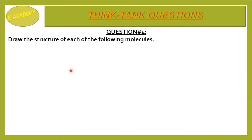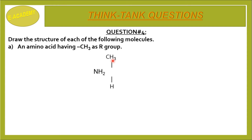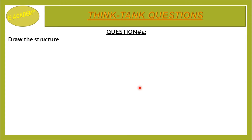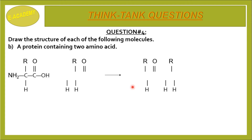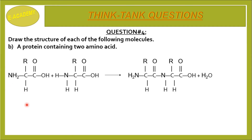Question No. 4: Draw the structure of each of the following molecules. (a) An amino acid having CH3 as the R group. The general formula of an amino acid has R in it; if we place CH3 in place of R, we get the corresponding structure. (b) A protein containing two amino acids: when two amino acids combine, a peptide bond is formed and water is removed as a byproduct.